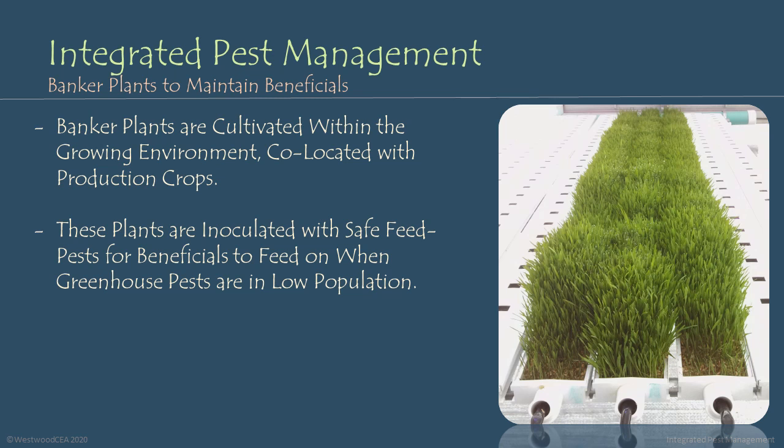Should a juicy peach aphid come into my greenhouse and land on one of my lettuce crops and start feeding, the aphidious wasps will be able to sense the pheromones of that aphid feeding. They will hunt it down and kill it before it's able to grow and reproduce into a population that will cause crop damage to the crops I'm actually cultivating commercially.